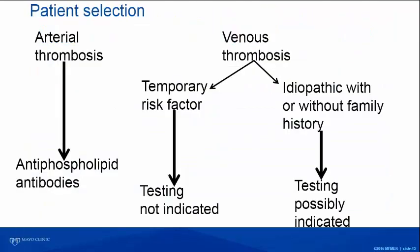So we have arterial thrombosis, venous thrombosis with a temporary risk factor. But what about the patient with an idiopathic event with or without a family history of thrombosis? This is where I put the maybe category. Maybe you should be testing some of these patients — maybe not everybody, but certainly some.